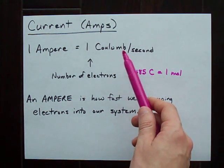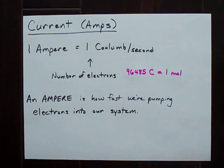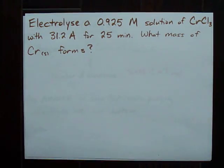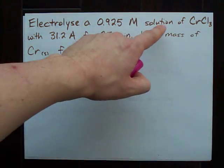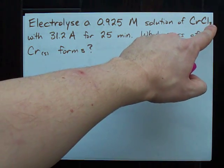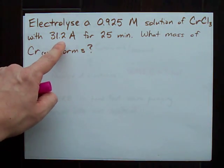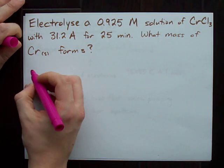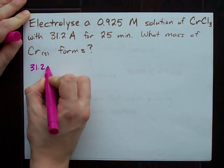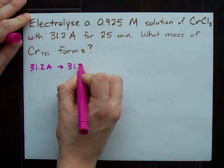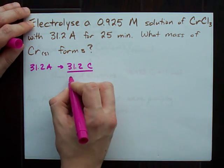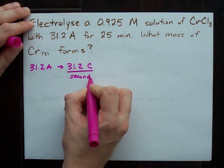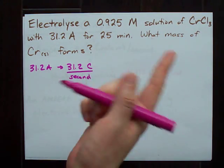We have to use this knowledge that an ampere is a coulomb per second when we're dealing with amps in questions like this one: electrolyzing a solution of chromium chloride with 31.2 amps for 25 minutes. And we want to know what mass of Cr solid forms. Remember, 31.2 amps means we're pumping in 31.2 coulombs every single second. How many electrons is that?